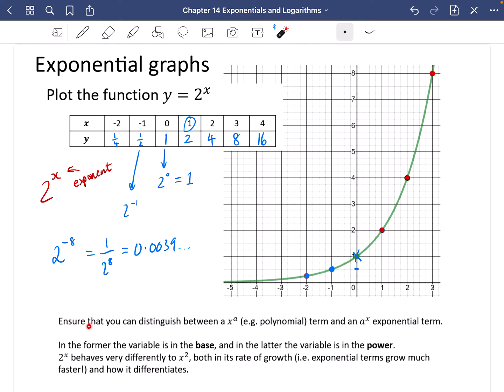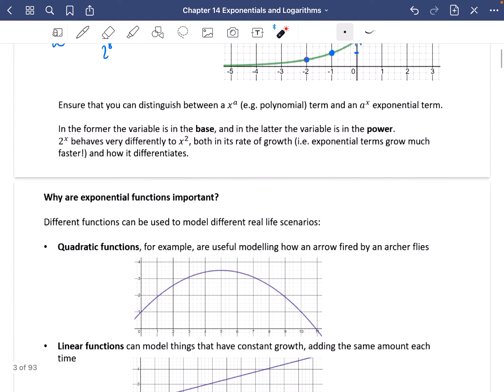So what I've written down here at the bottom is you need to ensure that you can distinguish between an x to the power of a, in other words, like an x squared, an x cubed kind of graph, a polynomial, and an a to the power of x exponential term. These are really, really different to each other. In this one, the variable is in the power. In the ones we've looked at so far, the variable is in what we call the base. So in the former, the variable is in the base. And in the latter, the variable is in the power, just repeating what I've said there. 2 to the power of x behaves very differently to x squared, both in its rate of growth, i.e. exponential terms grow much faster, and how it differentiates. We don't know how this differentiates yet. You do know how this differentiates. So we're going to explore a little bit more about these exponential functions.